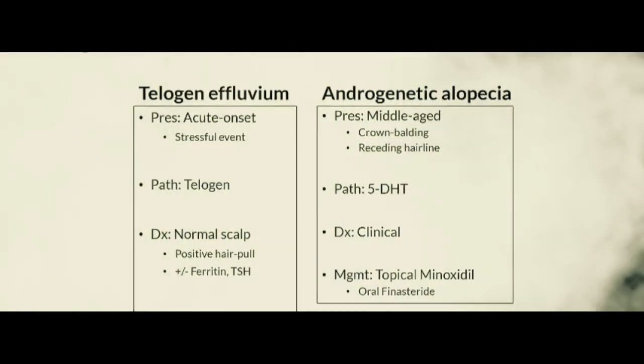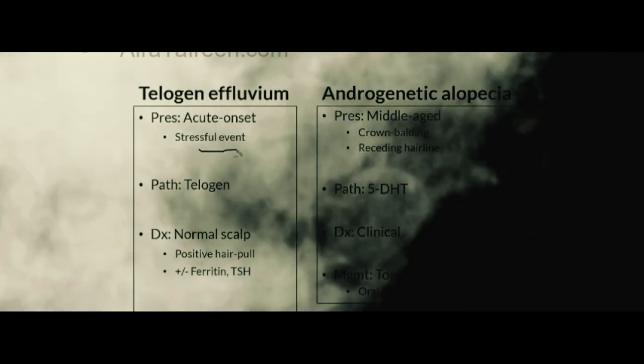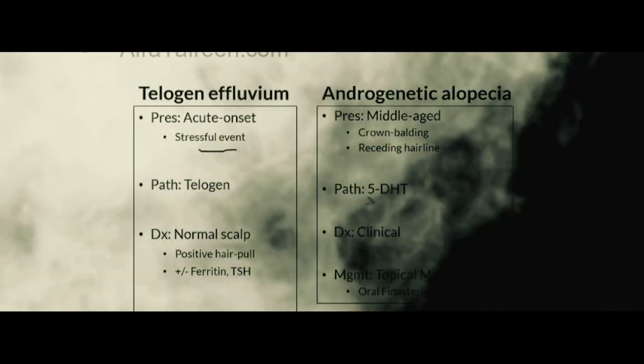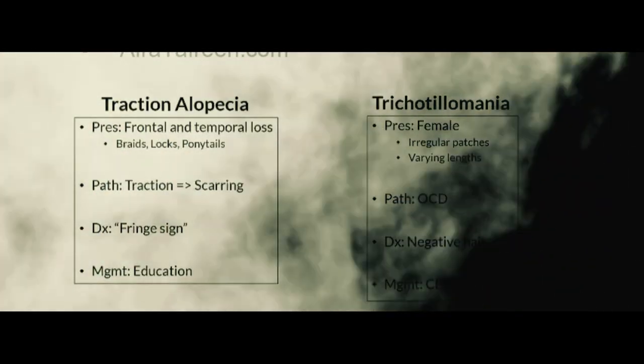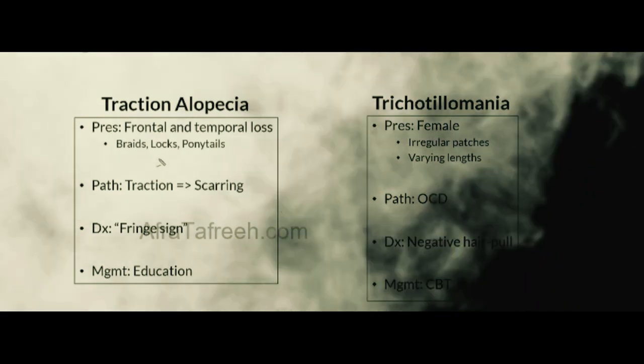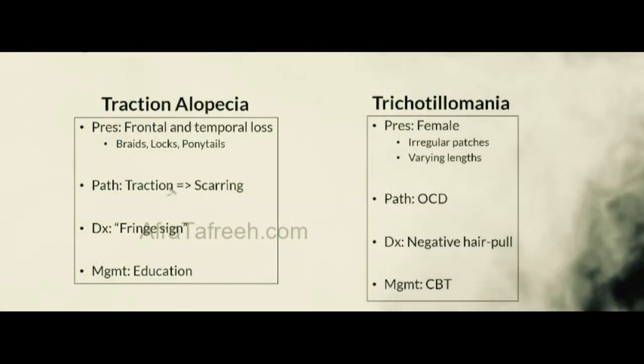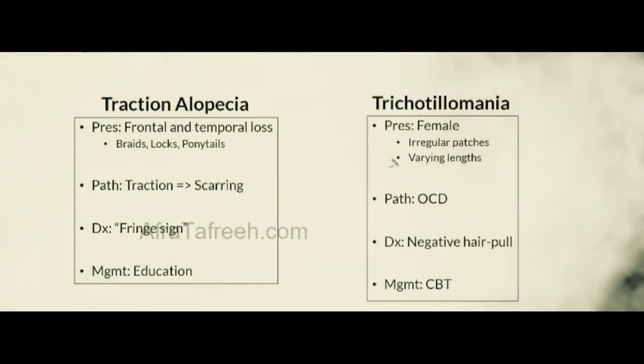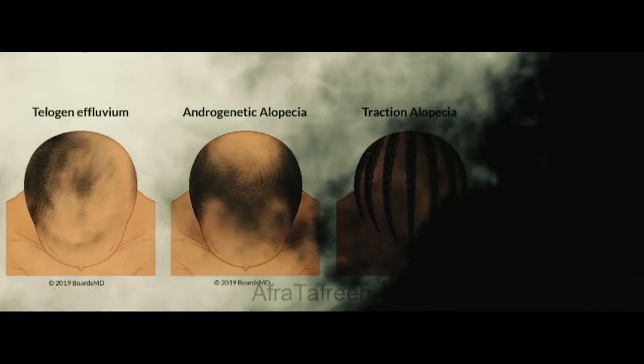In conclusion, we have covered some extremely high-yield alopecia conditions. For telogen effluvium, look for a stressful event triggering the onset of hair loss. For androgenetic alopecia, know the pattern of hair loss for male and female patients and the role of 5-DHT. For traction alopecia, look for hair modifications such as braids, locks, or ponytails, as well as the fringe sign. For trichotillomania, look for irregular patches of hair loss with varying lengths, especially with a negative hair pull test. Please review these notes and I'll see you in the next video.